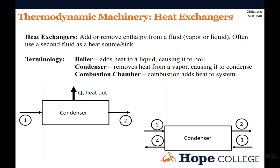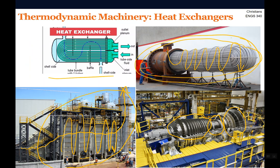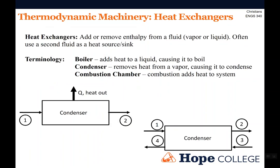Typically we do that without work — so we're adding or removing heat — and they often use a second fluid as a heat source or sink, as shown in the shell and tube heat exchanger and in what we call the heat recovery steam generator. A boiler is typically a system where we're adding heat to a liquid, causing it to boil. A condenser is where we're removing heat from a vapor, causing it to condense. And then there are systems like a combustion chamber where we're directly adding heat to the system by a process like combustion.